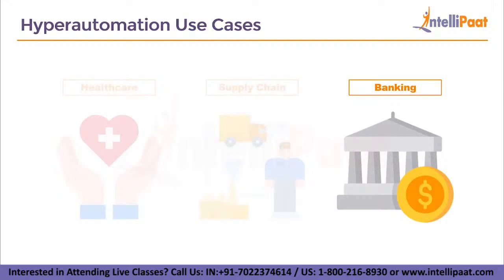Finally, we have the banking and finance industry. Banking and finance are under constant pressure to reduce costs, improve efficiencies, and provide a more available and personalized customer experience. Hyperautomation can provide staff members with higher data quality so they can be more effective, and use business process management (BPM) to provide customers with information that enables more informed decisions.